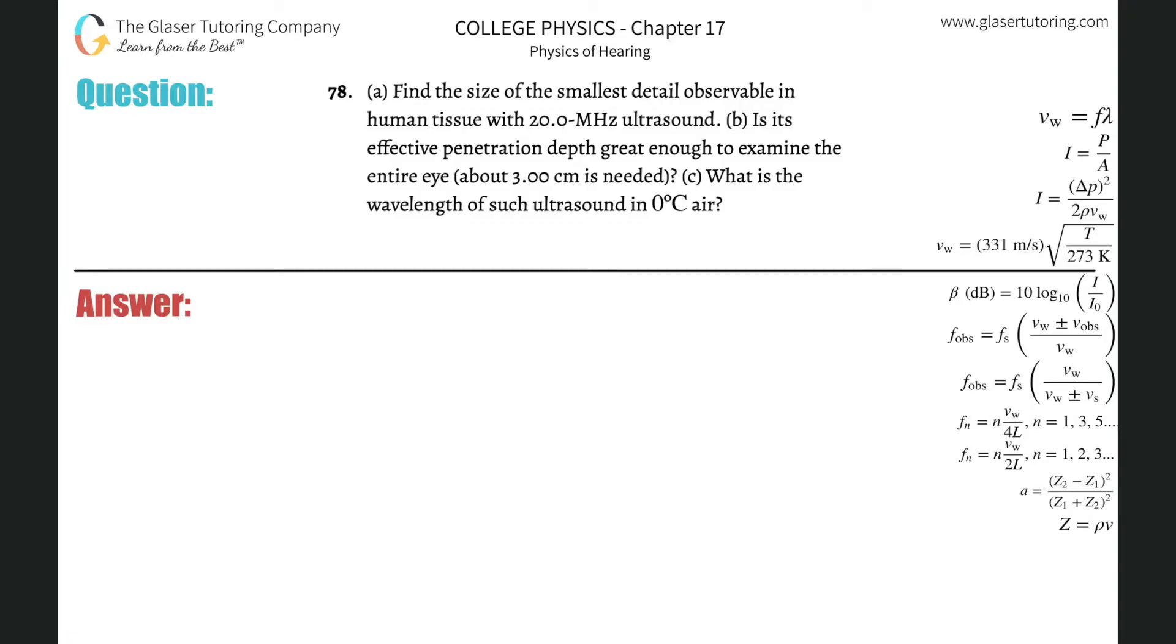Number 78, letter a: Find the size of the smallest detail observable in human tissue with 20 megahertz ultrasound. You have to remember that the smallest detail observable will be equal to the wavelength. So basically letter a, we can restate it as: what's the wavelength of the ultrasound?